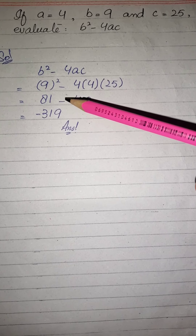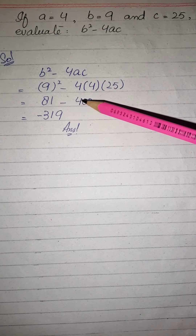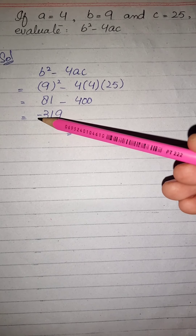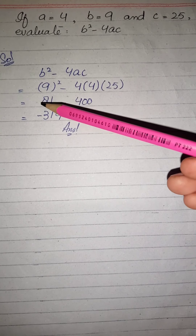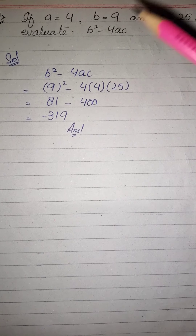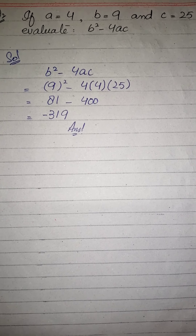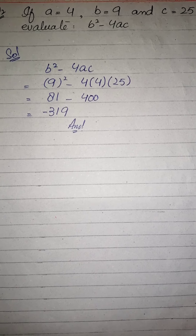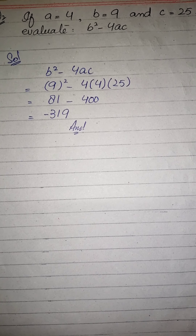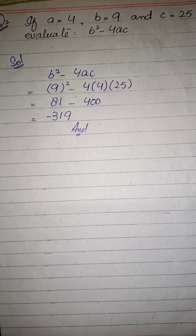81 minus 400۔ بڑی value minus کی ہے تو sign minus کی آئے گی۔ 400 میں سے 81 minus کریں تو ہمارا answer ہے minus 319۔ Students, we will meet you in our next video, till then take care, Allah Hafiz.